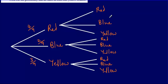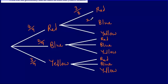Now we need to work out the probabilities for the second picks. If he selects a red counter first and doesn't replace it, there is one fewer red counter in the box. There were four originally, so now there are three red counters out of a total of eight. The blue stays at two out of eight, and the yellow stays at three out of eight.